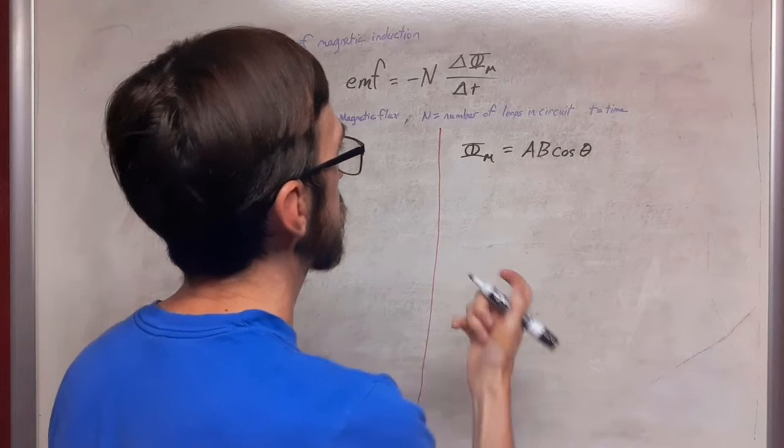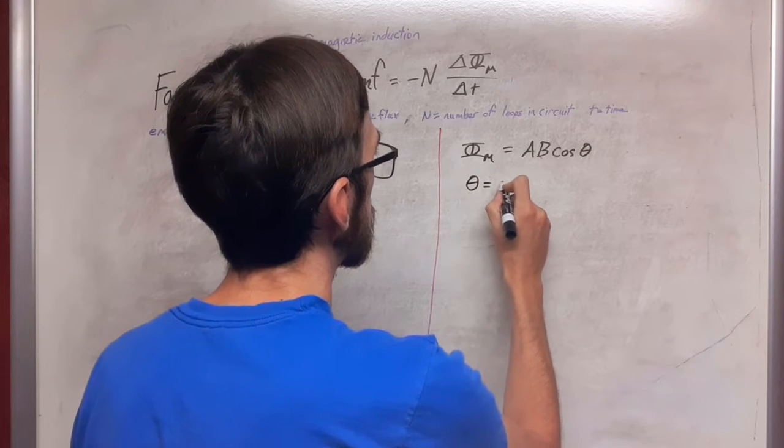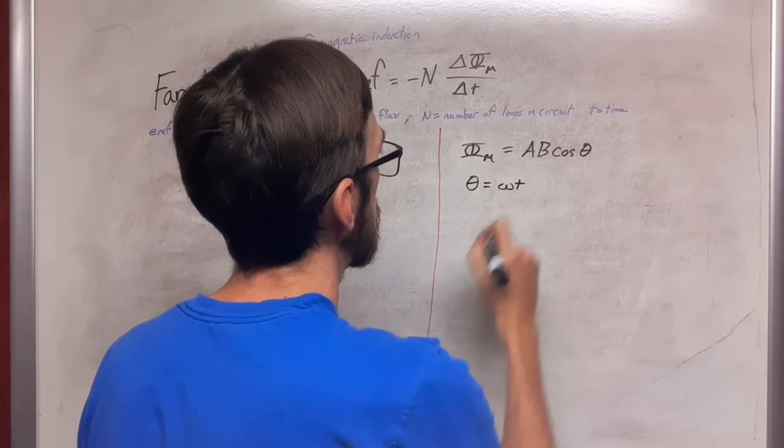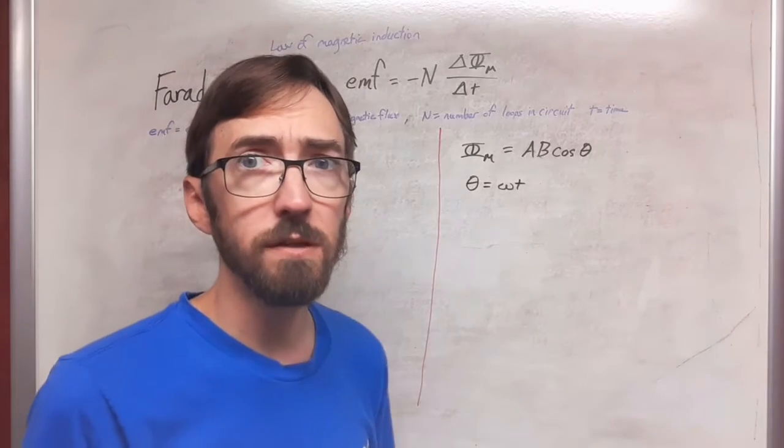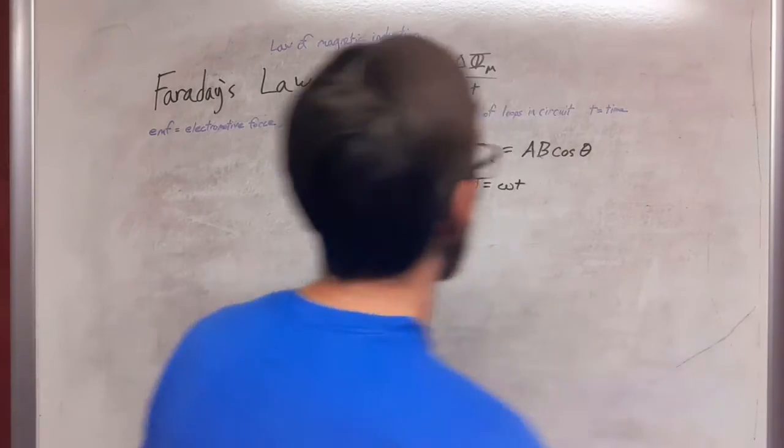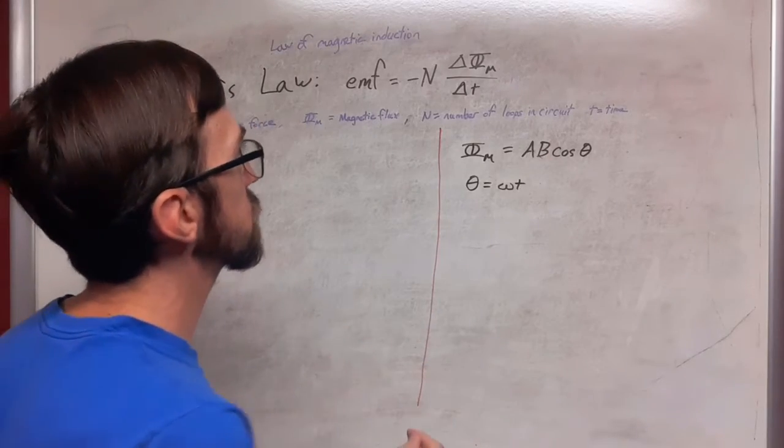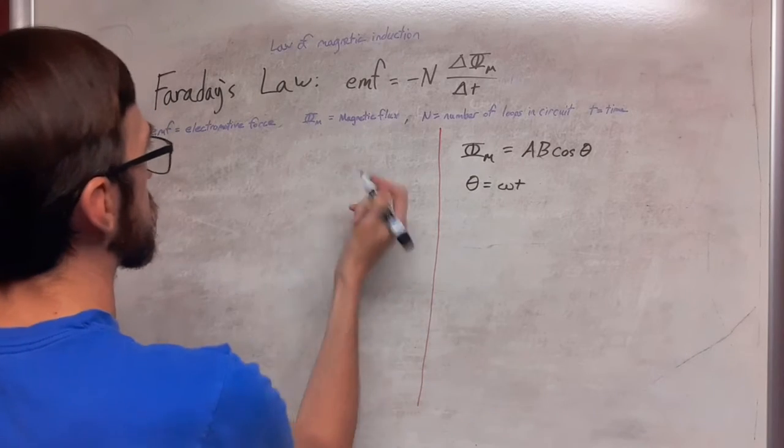Another substitution that we can use is that theta is equal to omega t. So omega is our angular frequency of rotation of the loop and then t is time. So these are the two substitutions that we're going to want to use in Faraday's law here.